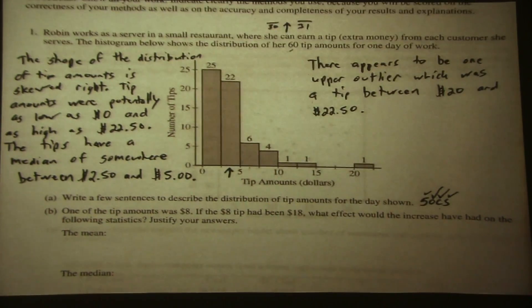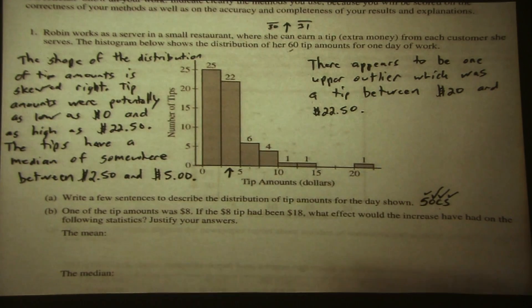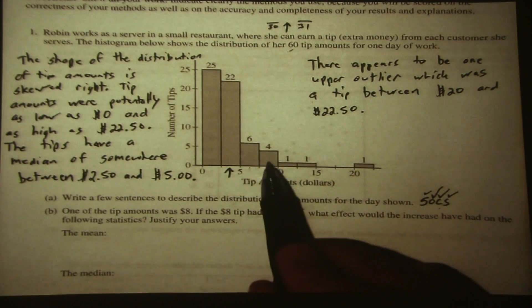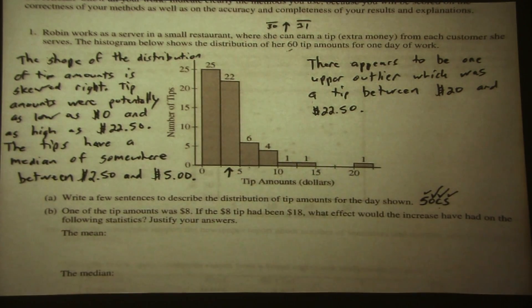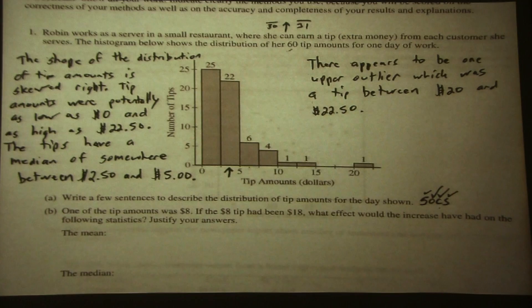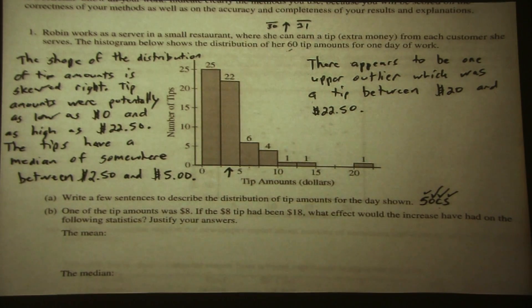Part B: one of the tip amounts was $8 — that's somewhere in this class, one of these four tip amounts. If the $8 tip had been $18, what effect would the increase have had on the following statistics? Justify your answer.